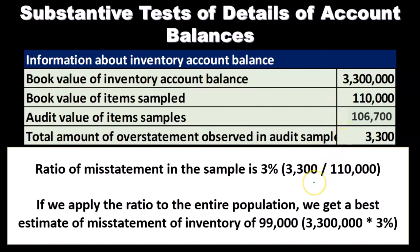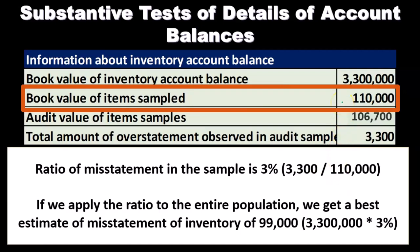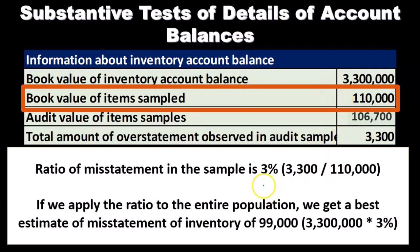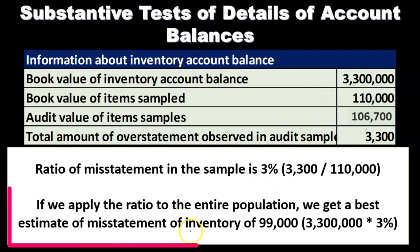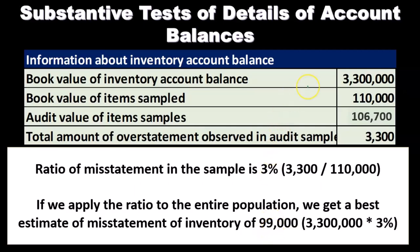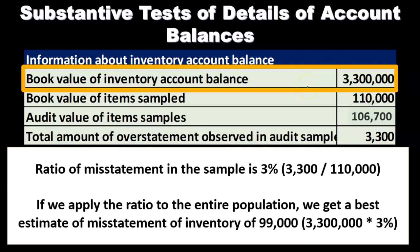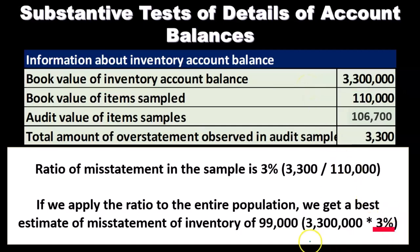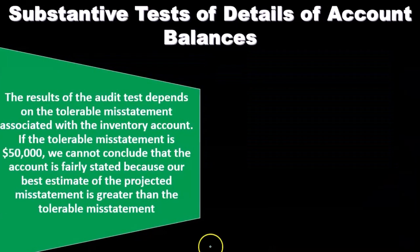We compare that $3,300 difference to the book value of the sample — not the total population — giving us a 3% ratio of misstatement in the sample. If we apply that ratio to the entire population, we get a best estimate of misstatement in inventory of $99,000. We take that 3% misstatement and apply it to the entire population of $3,300,000, which gives us a projected misstatement of $99,000.